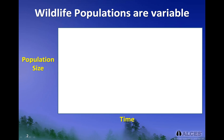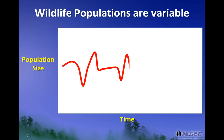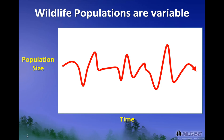Wildlife populations change over time, and this change over time is known as trend. If we were to track population size over time, we would see how that pattern might look in a graph like this one.